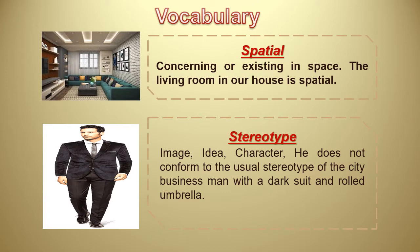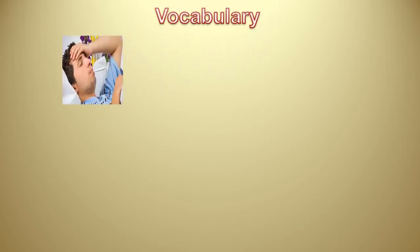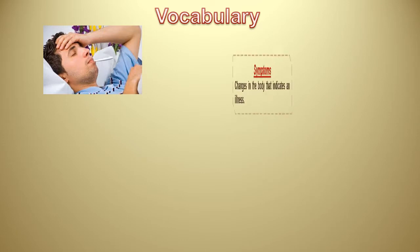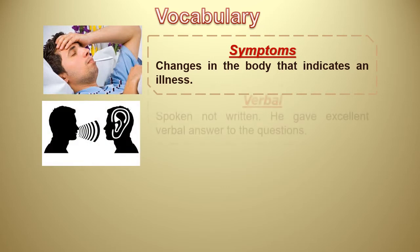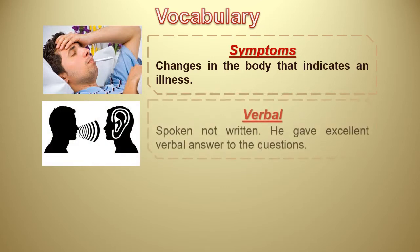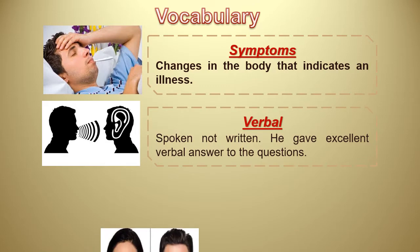The stereotype of the businessman is someone with a dark suit and a rolled umbrella, meaning he doesn't look like a typical businessman. The next vocab is symptoms. Symptoms means changes in the body that indicate an illness. If you are sick, there are some symptoms that appear in your body.